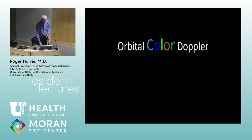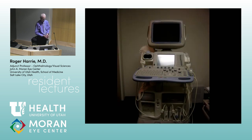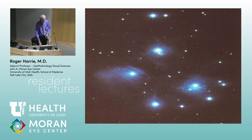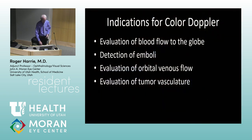Orbital Doppler uses the Doppler concept — as a moving object changes frequency, like a train whistle changing pitch as it passes. This same concept is used in astronomy for the big bang and red shift versus blue shift. In ophthalmic use, Doppler can assess blood flow to the globe, emboli detection, orbital venous flow, and tumor vasculature. We're also doing a study with temporal arteries. The machine shows venous flow as blue and arterial flow as red — because that's what we're used to.